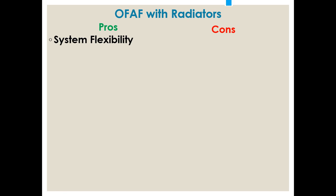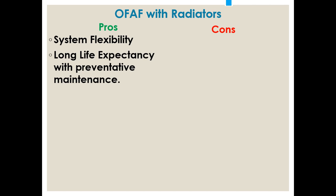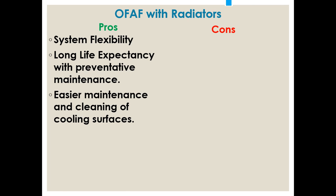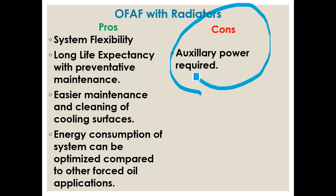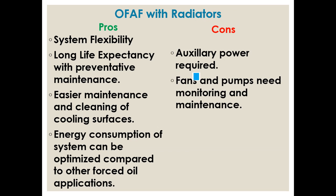System flexibility can be adjusted by using the fan off mode, but capacity will be reduced. Preventive maintenance is required - checking the fan and checking the oil pump on a regular basis. This will result in better equipment life. Maintenance and cleaning of cooling surfaces will be better because they are more exposed, and energy consumption can be optimized in forced oil applications.